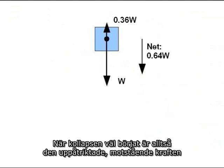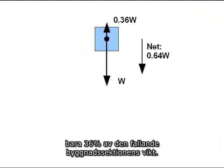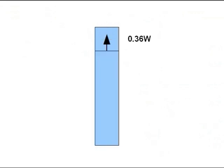In other words, once it starts falling, the upward resistive force is only 36% of the weight of the falling section of the building. So far, so good.